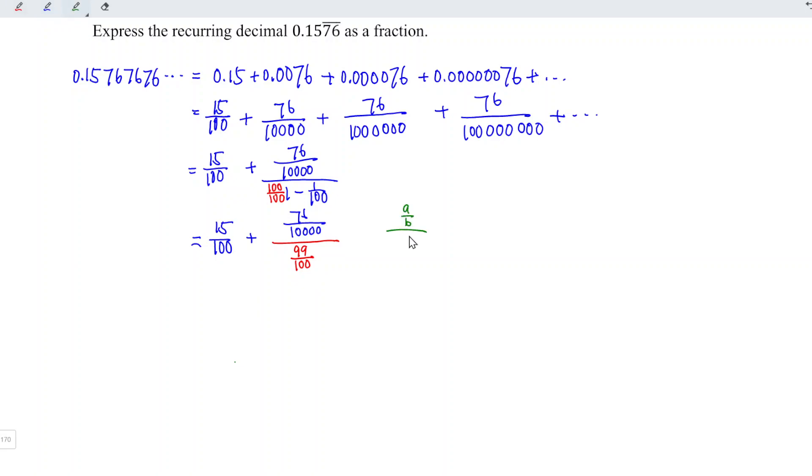We can simplify by removing two zeros from B and D, and rewrite this as A times D divided by B times C. This equals 15 over 100 plus 76 times 1, which is A times D.